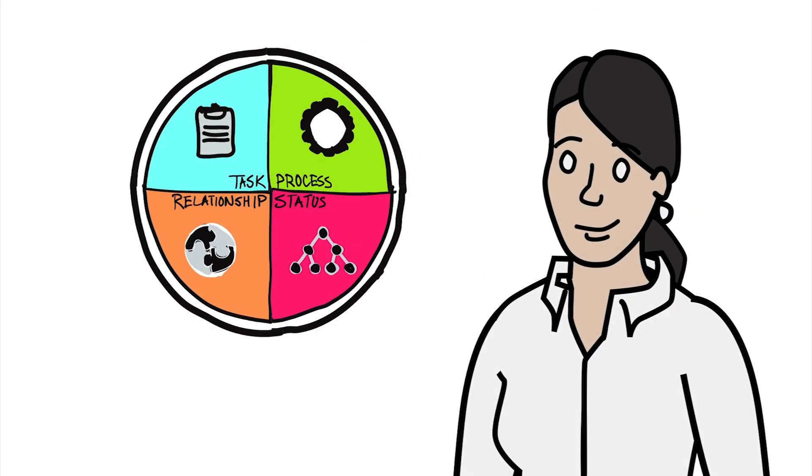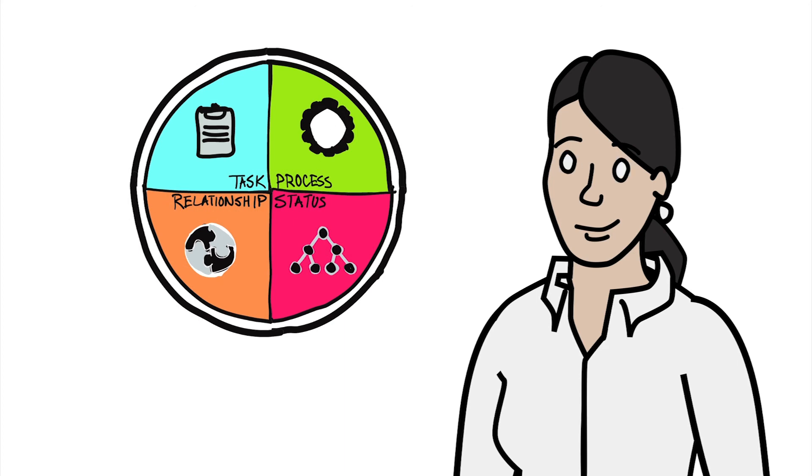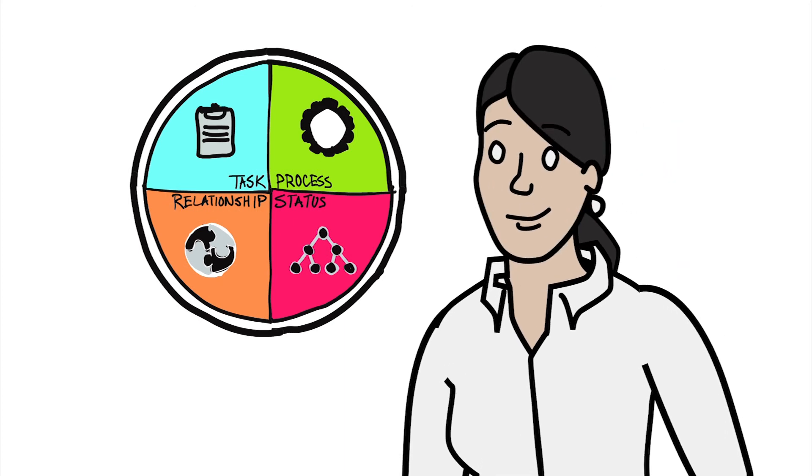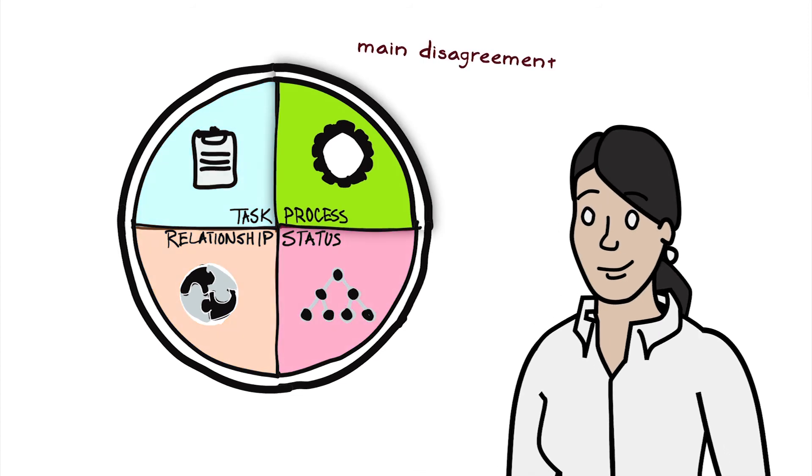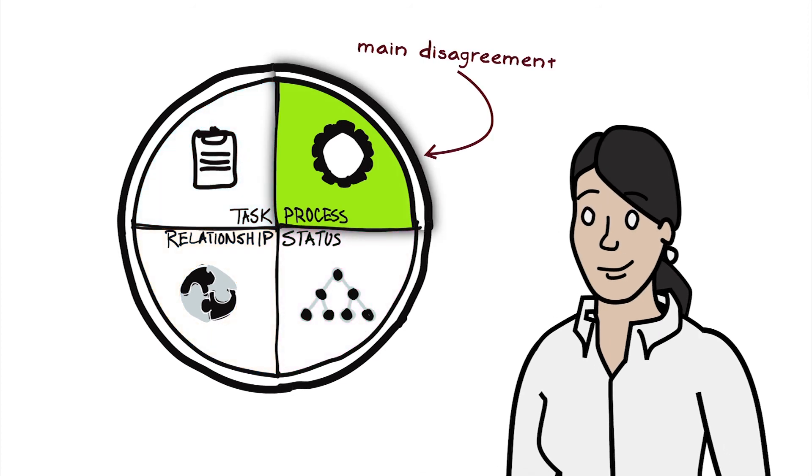Determining the source of conflict will help you prioritize the next steps so that you can manage conflict more effectively. In our example, the source of Jake and Nala's disagreement is the process. So Kate needs to help them find common ground.